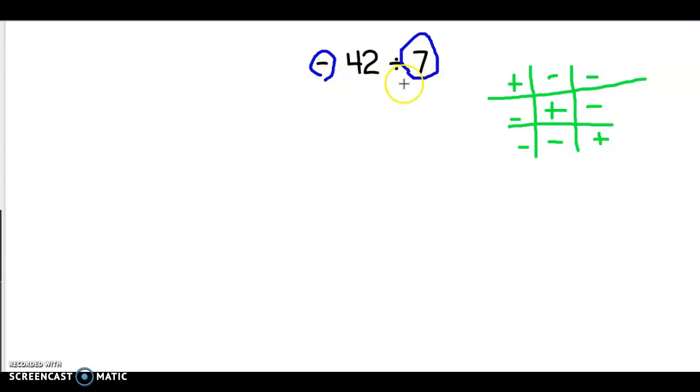So we have a negative divided by a positive. I'm going to look at my chart here and it looks like it matches this row. A negative divided by a positive shows me that my answer is going to be a negative.